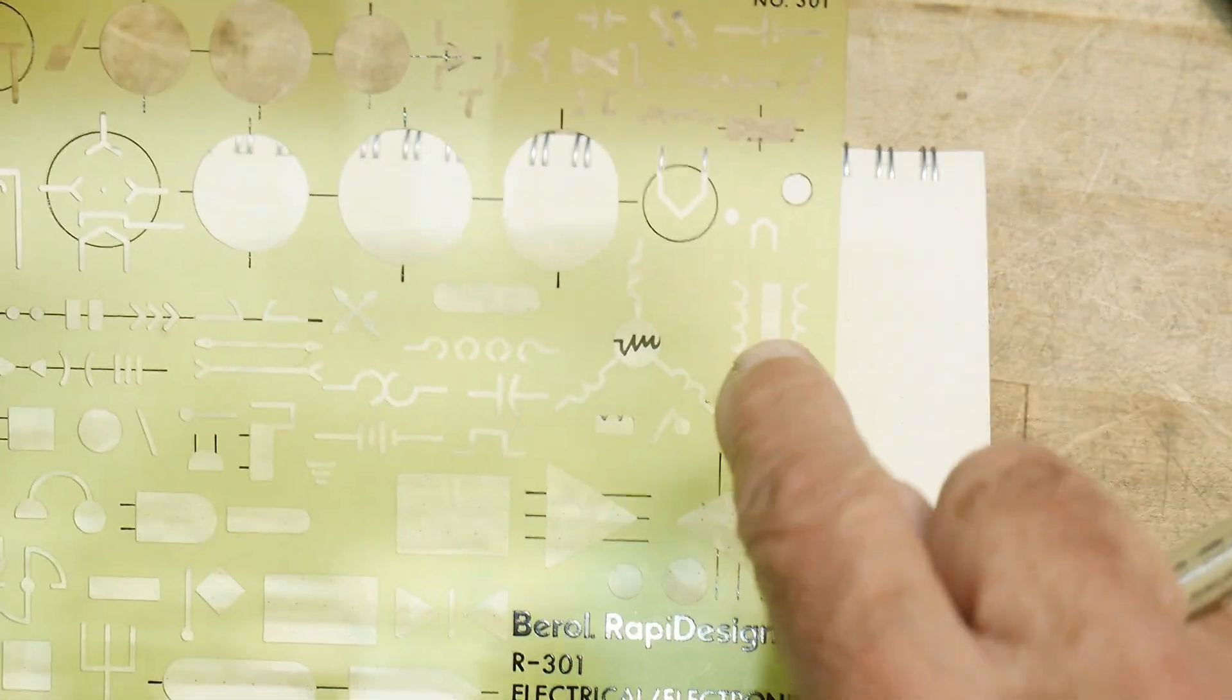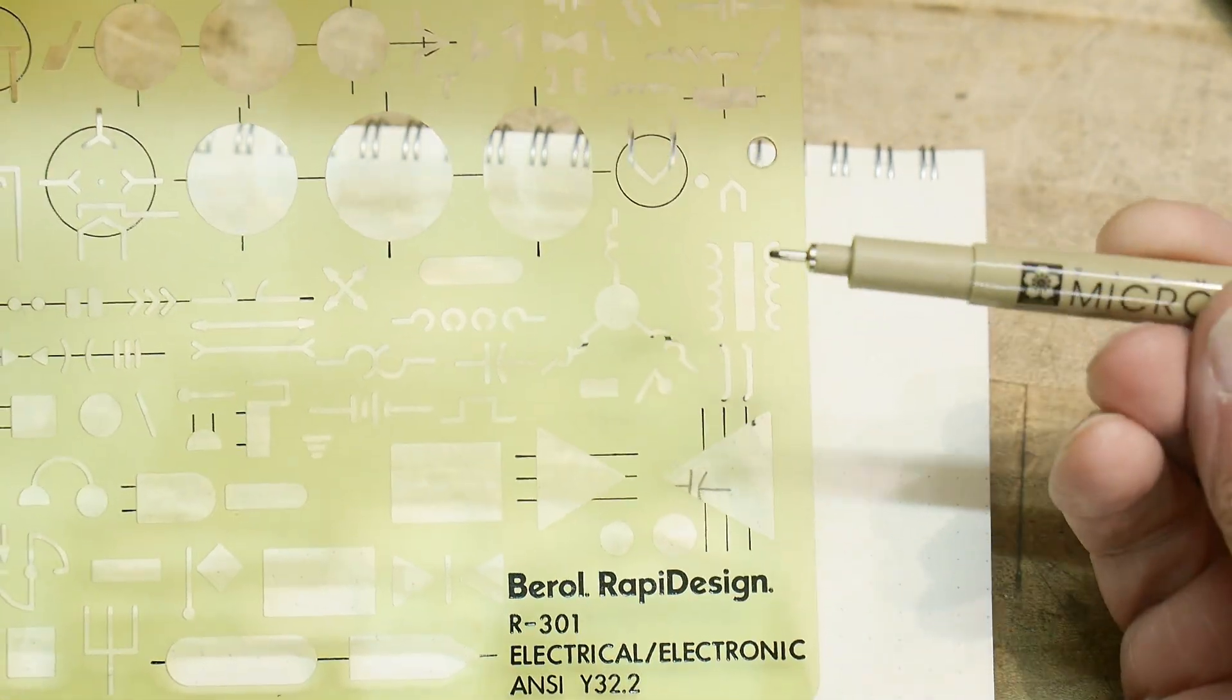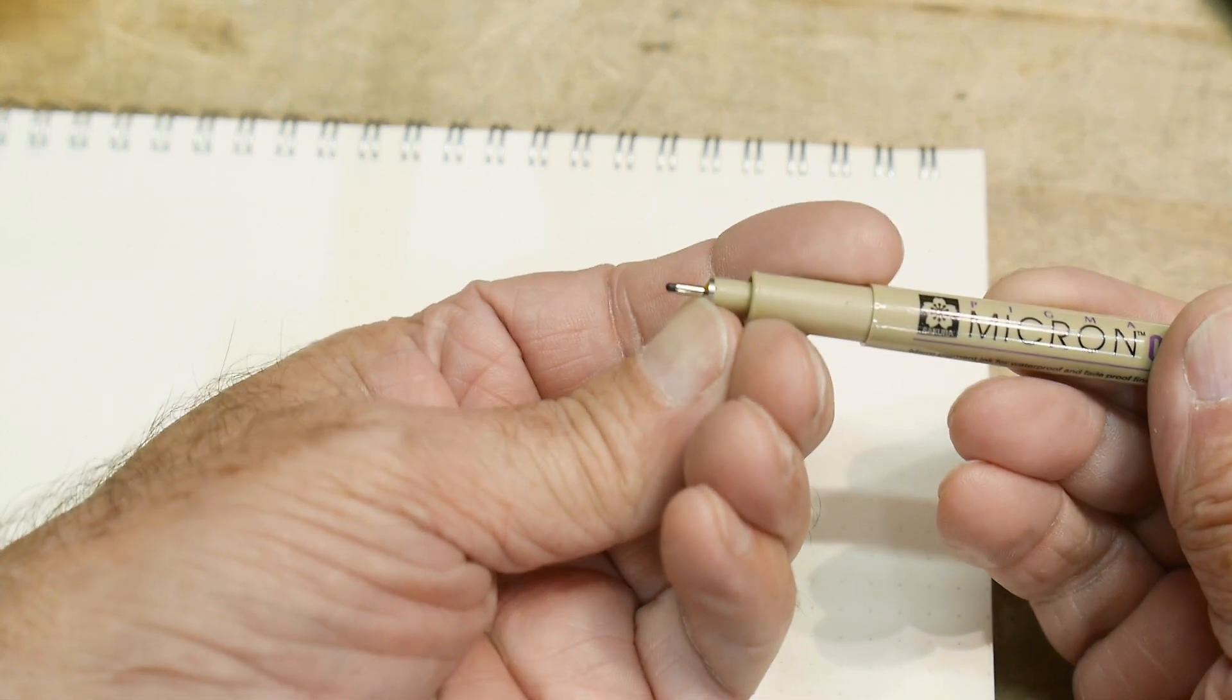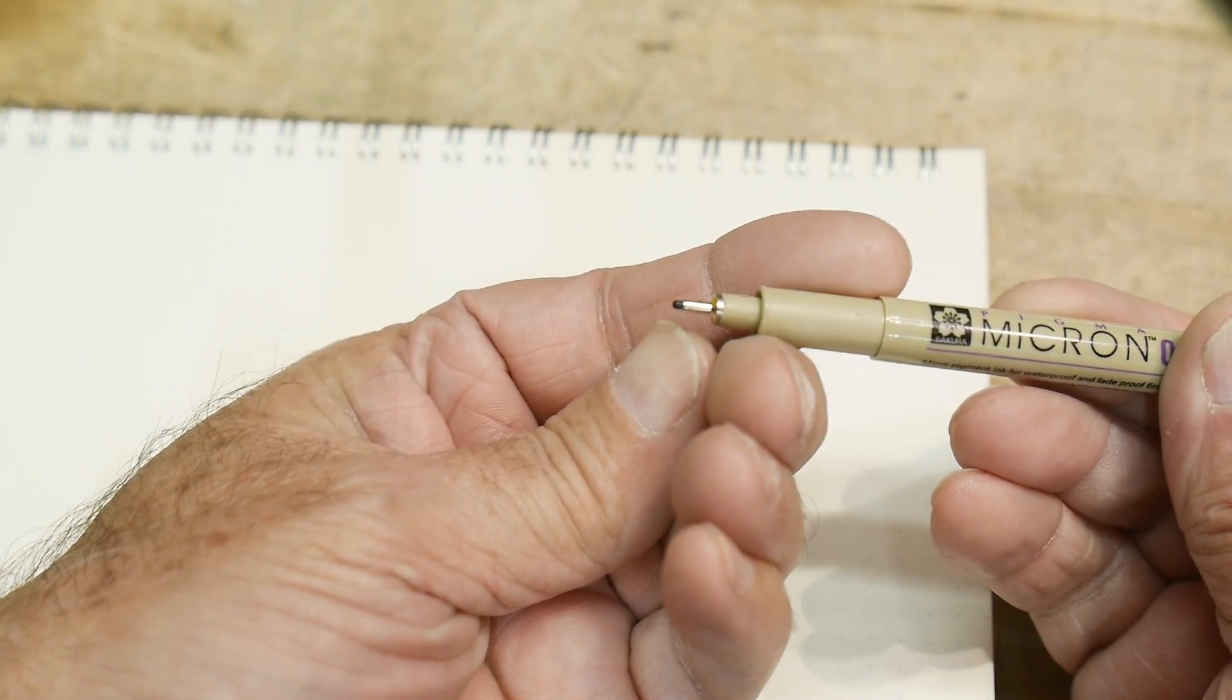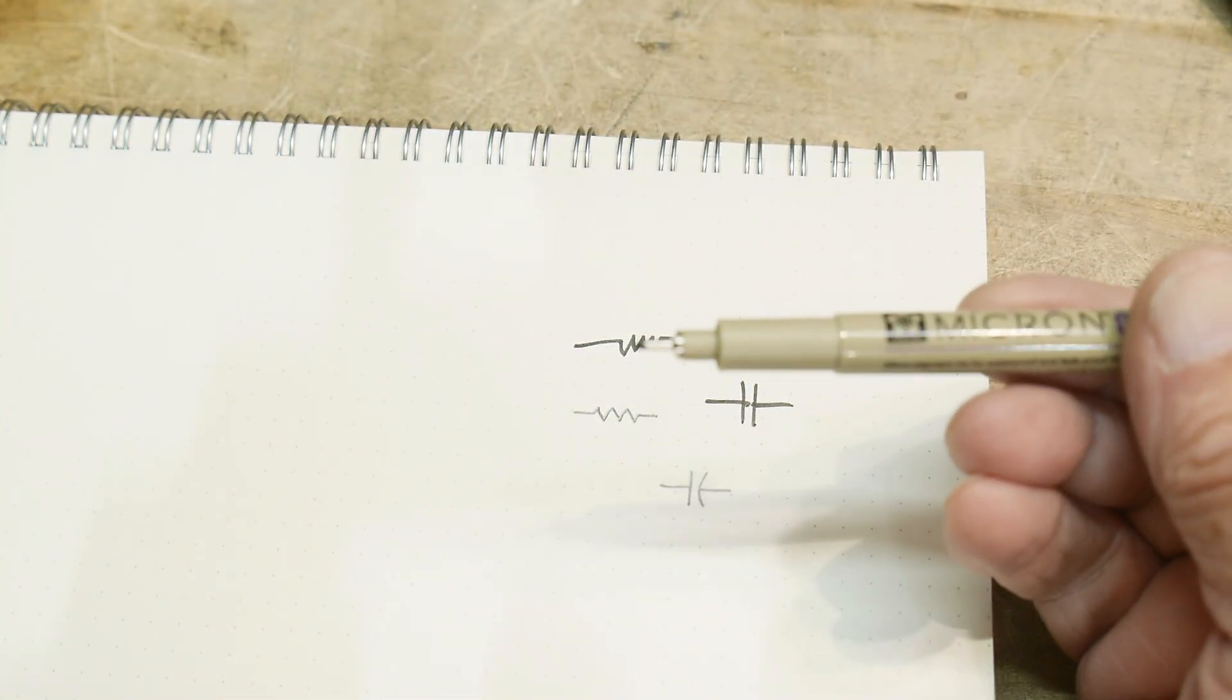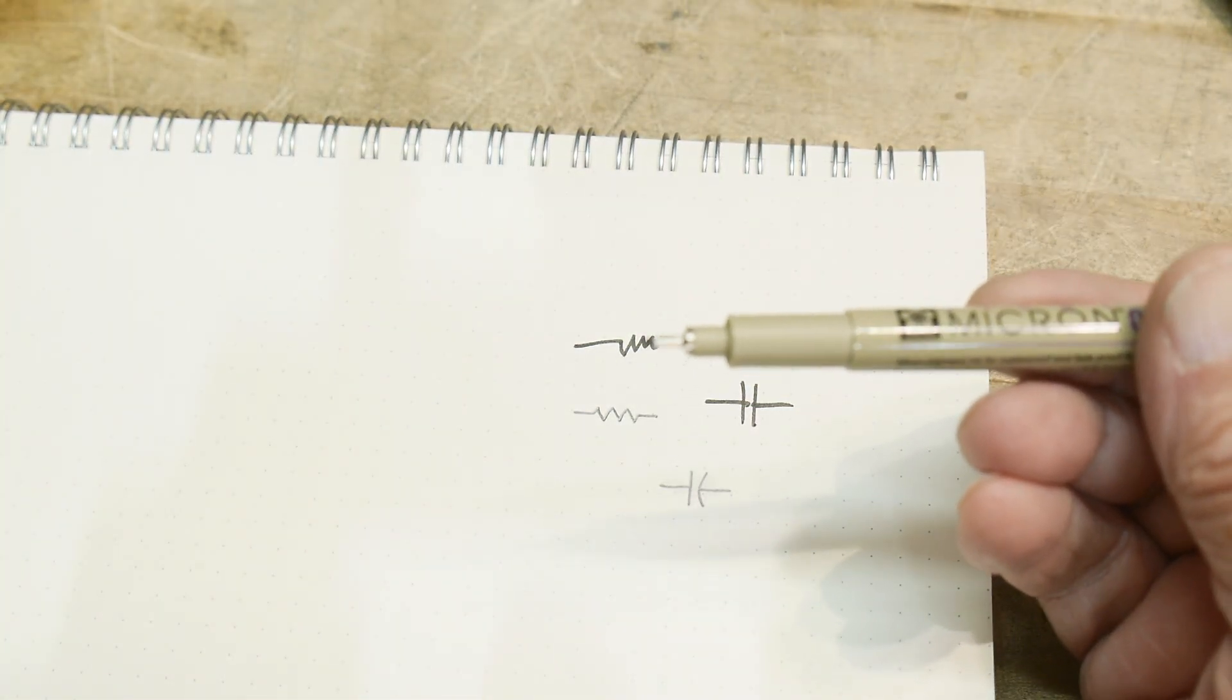And wouldn't it be nice if I had a template that I could use this pen? Well, it won't fit. These little slots are too narrow for this pen. This pen kind of has a thick metal section, and then a little fiber nub at the end that has the ink. It'd be nice to have a template of the correct width.